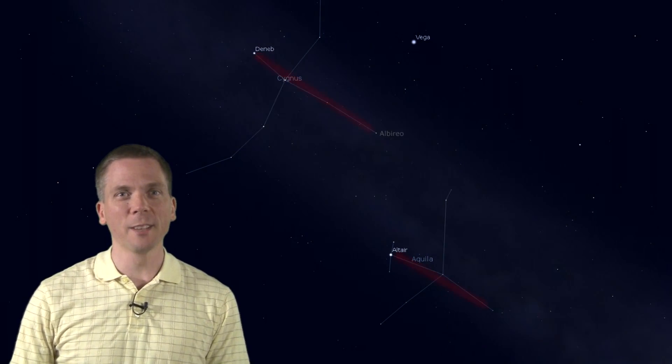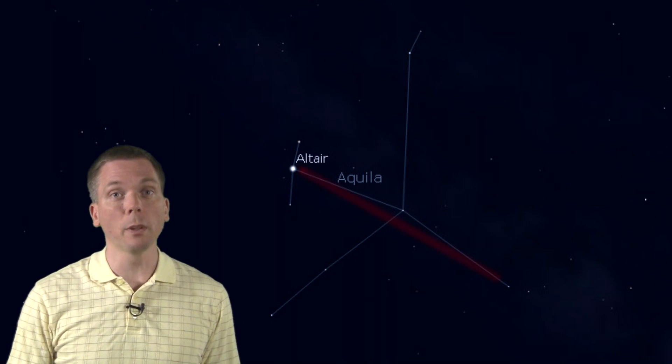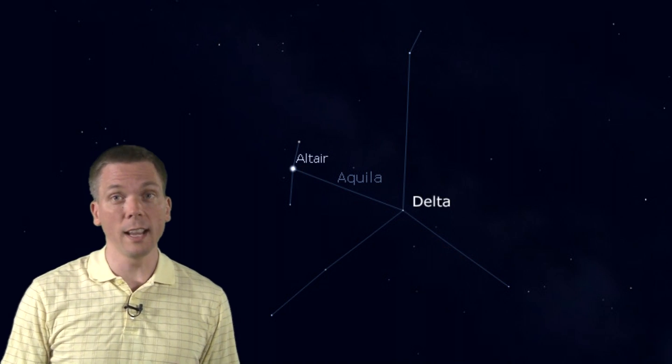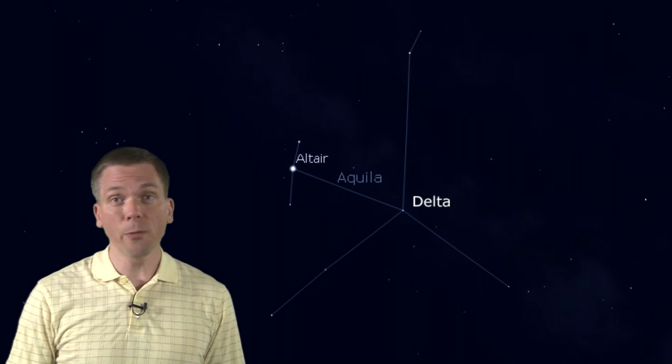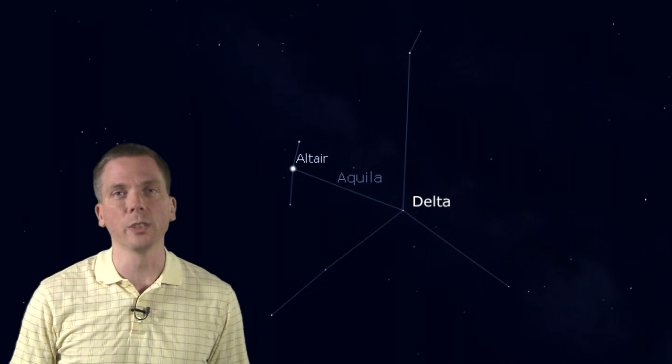Second, a deep sky object. We want to find a third magnitude star at the tail of Aquila. From Altair, scan naked eye or with binoculars or finderscope along this general line, and find the delta star in Aquila, a 3.4 magnitude star 8 degrees away from Altair, just over a binocular field of view.